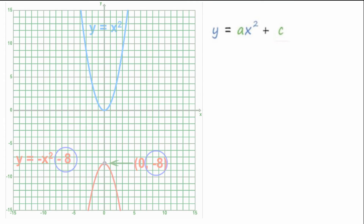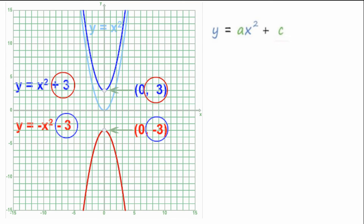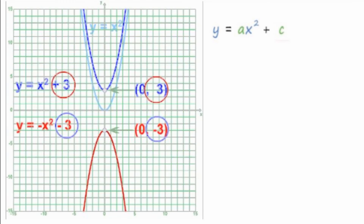Now I'm going to show you two parabolas — one with a positive X squared, one with a negative X squared — and the vertices are at (0, +3) and (0, -3), just like you'd expect. You can read those right off of the constant term. The sign in front of the X squared tells us if it's an upward facing or a downward facing parabola.